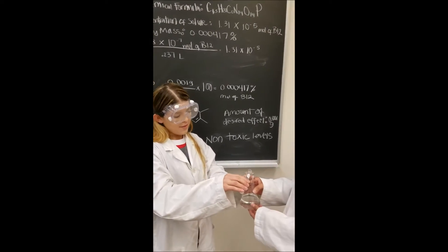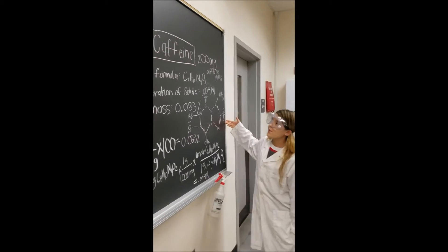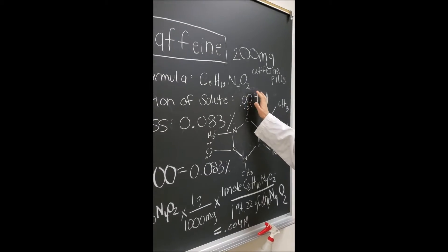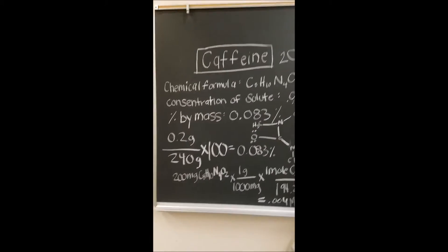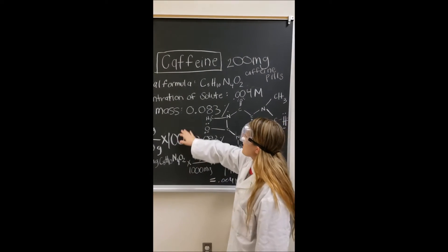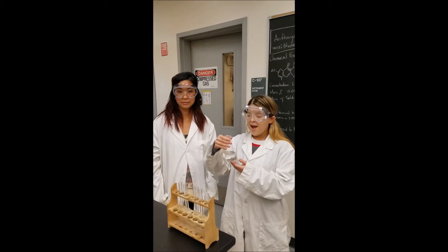So the next ingredient is going to be caffeine. So caffeine's chemical formula is going to be C8H10N4O2, and the concentration of solute is going to be 0.004 molarity, and percent by mass is going to be 0.083%.